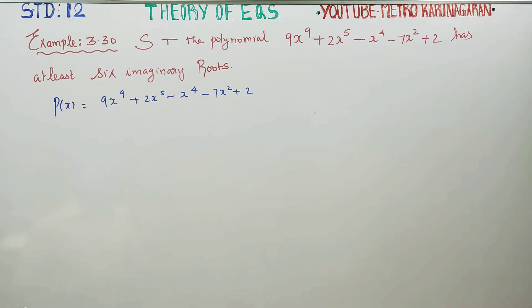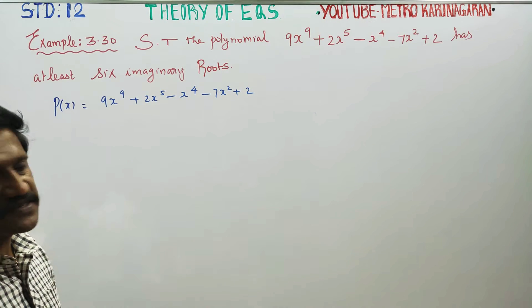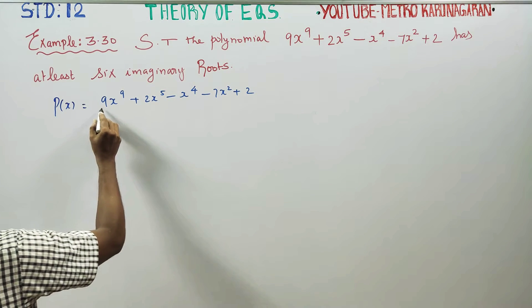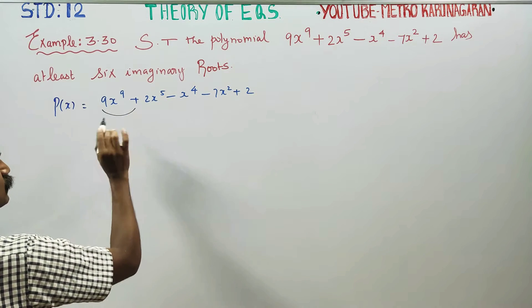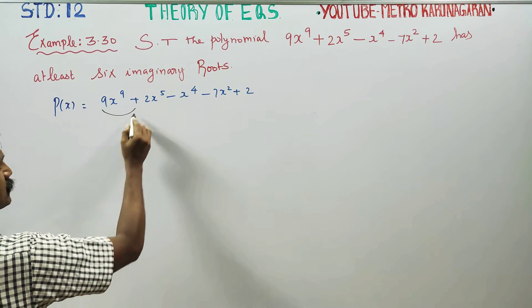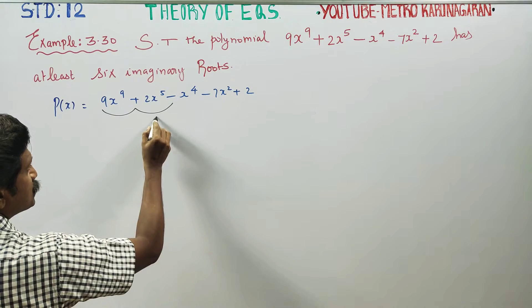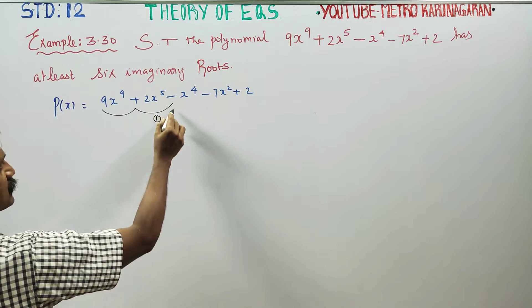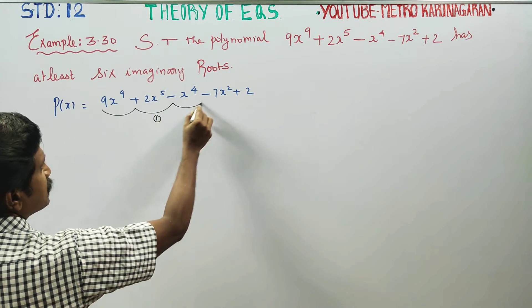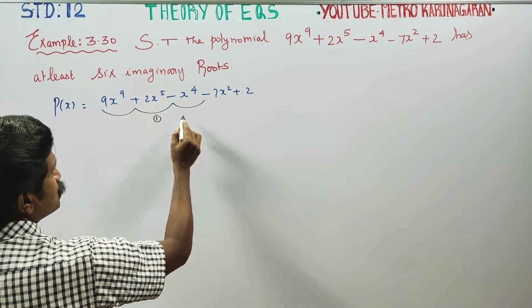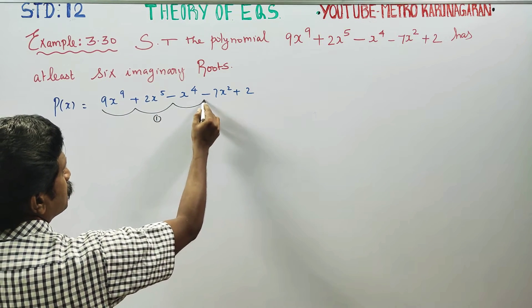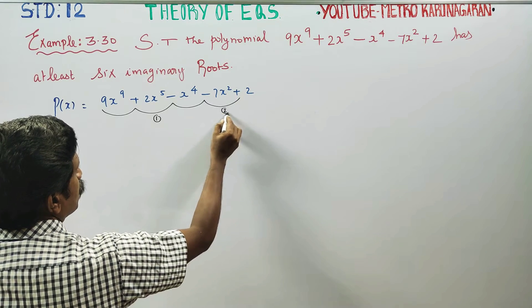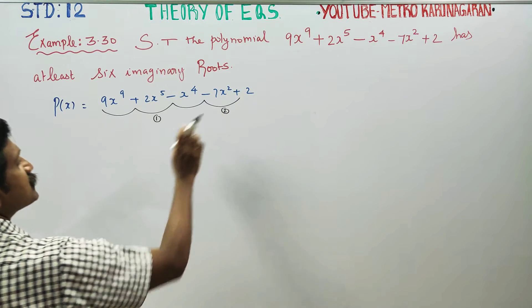Here are the sign changes. Plus, plus — no sign change. Plus, minus — one change. One sign change. Minus, minus — no change. Minus, plus — one change. Total: two changes.